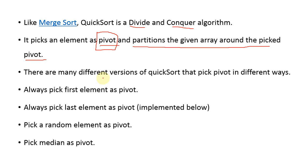In order to select this pivot from the list there are different methods. First one, always pick first element as pivot. Always pick last element as pivot, which is the n-1 element. Pick a random element as pivot. Or pick median as pivot. Generally first or the last element is going to be picked for the pivot.